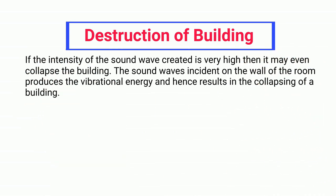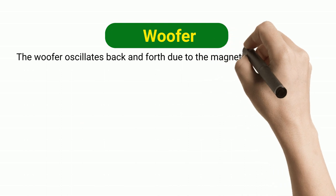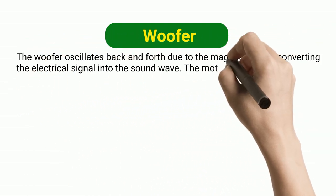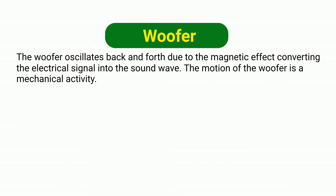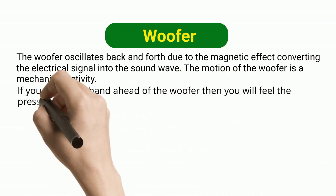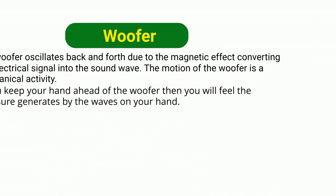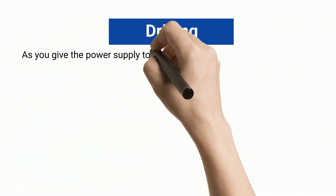Woofer: The woofer oscillates back and forth due to the magnetic effect, converting the electrical signal into a sound wave. The motion of the woofer is a mechanical activity. If you keep your hand in front of the woofer, you will feel the pressure generated by the waves on your hand.